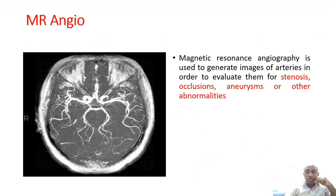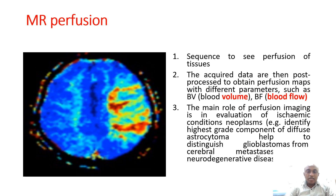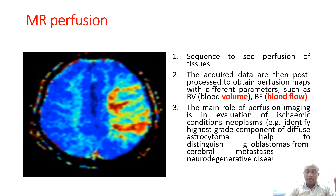MR Angiography is used to generate images of arteries to evaluate for stenosis, occlusions, aneurysms, and other abnormalities. MR Perfusion is another sequence to assess perfusion of a particular region — mostly in tumors, looking at blood volume and blood flow. It can be distributed more because of new angiogenesis; glioblastomas are mostly higher perfused rather than low-grade gliomas.